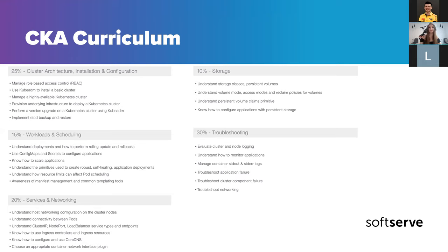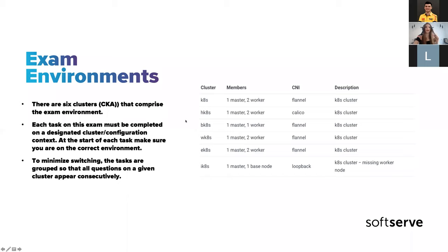That 30% means troubleshooting not only the cluster but also its workloads and application failures. At the exam, you will have six clusters with different network plugins — that's important. Each task on the exam must be completed on a specific cluster, so make sure you are checking that you are running on the correct environment before completing a task.